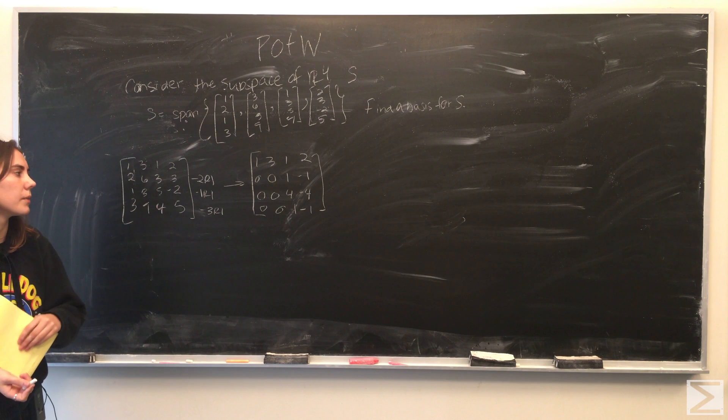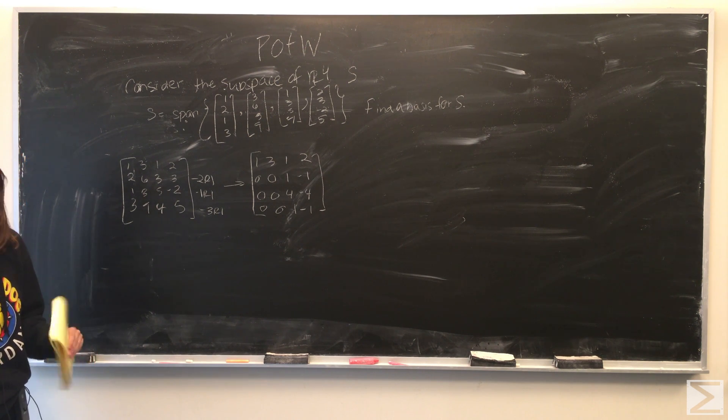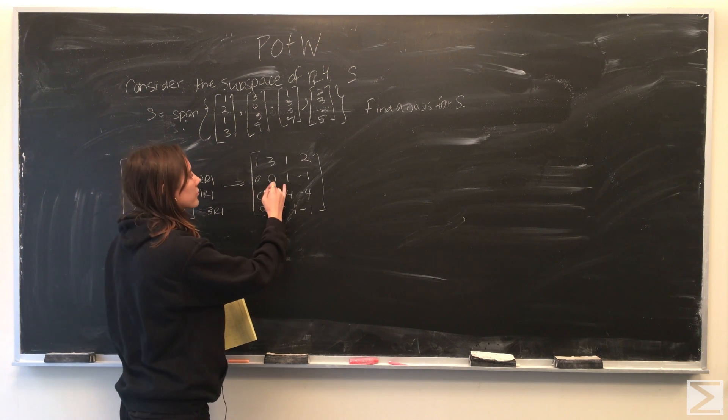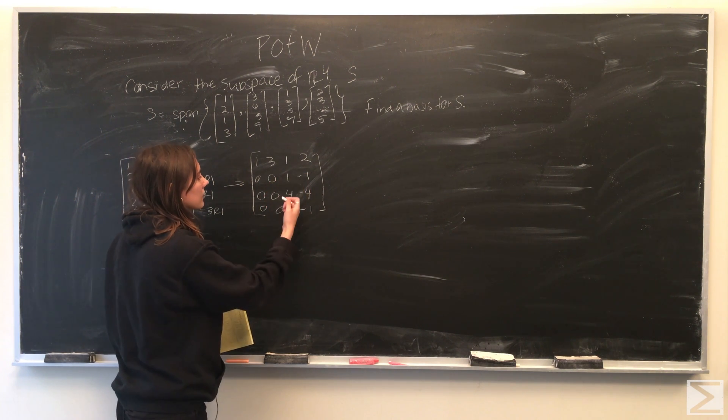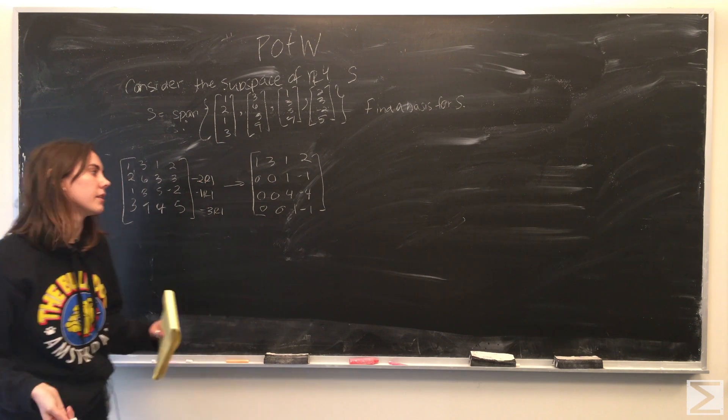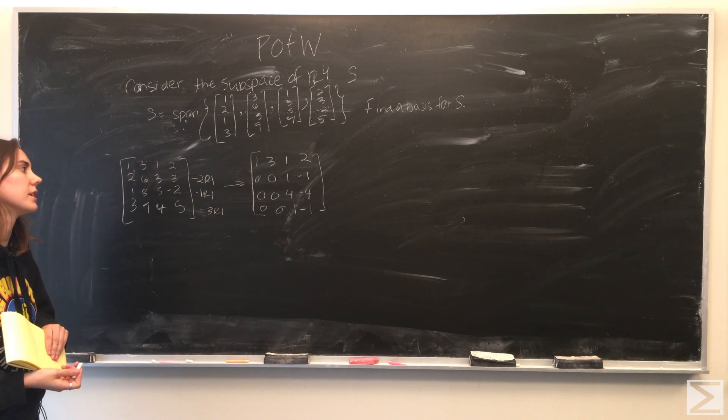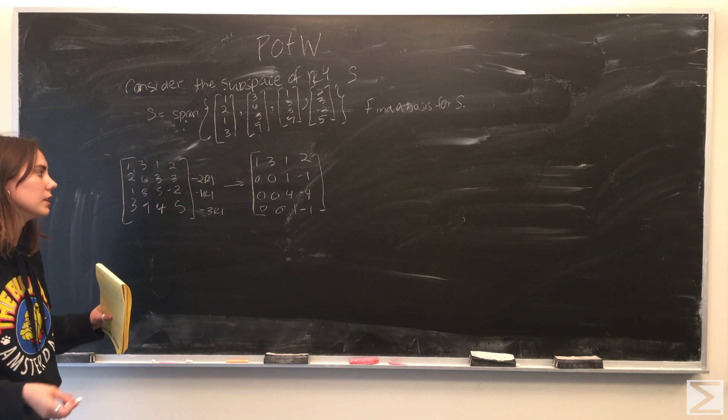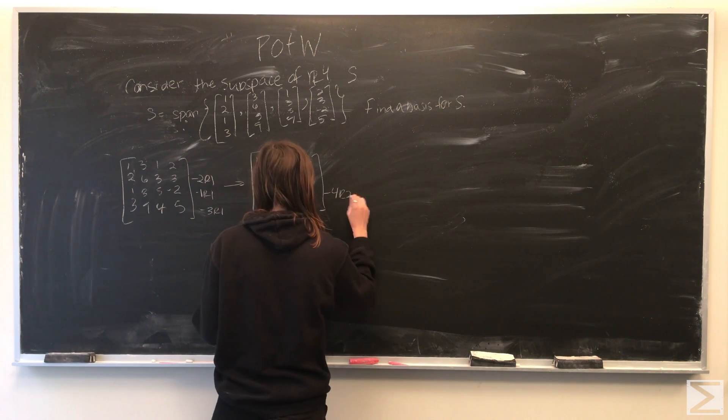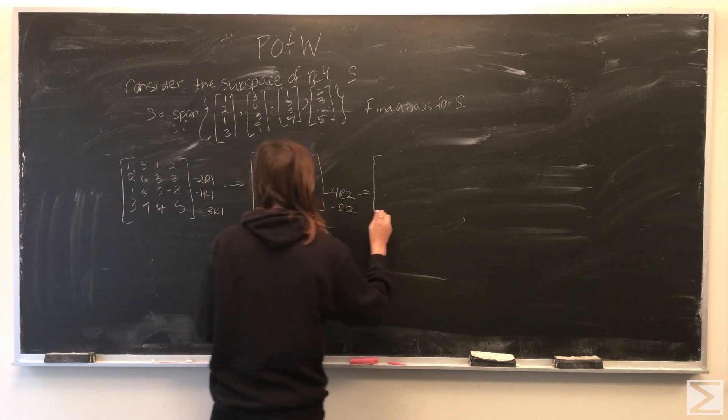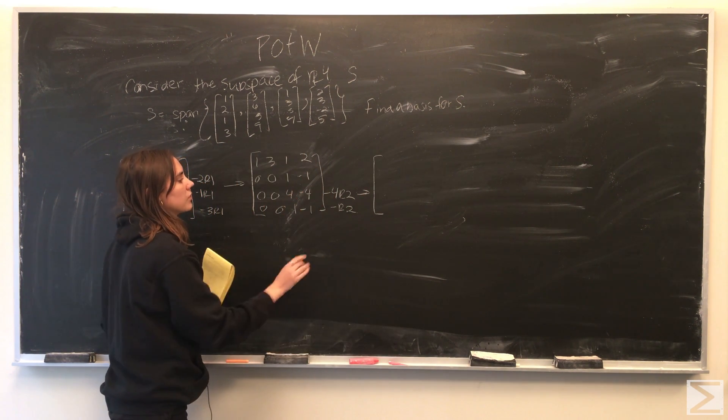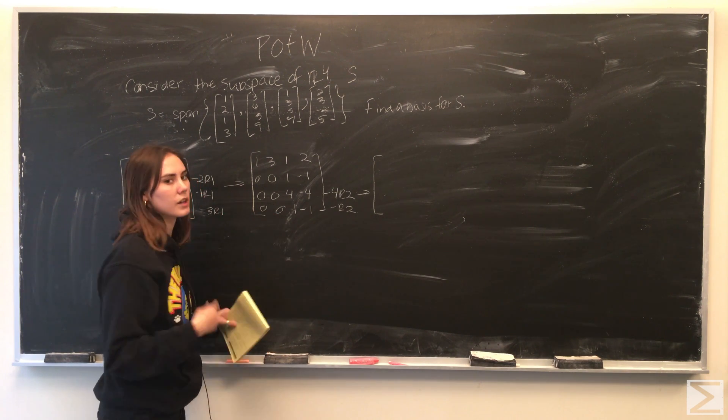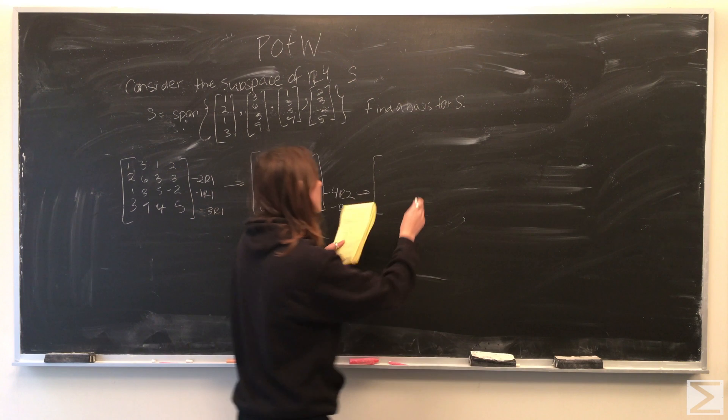So this is what we end up coming out with and we're already getting pretty close to being in reduced row echelon form. As you can see, in the second row we have [1,-1], and in the rows that follow we have basically the exact same idea. So we can just subtract the second row from the remaining third and fourth row, subtracting four times row two and just subtracting row two, we can then continue on eliminating the different rows of the matrix.